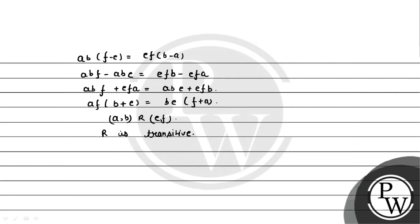Since relation R is reflexive, symmetric, and transitive — all three properties hold — that means relation R is an equivalence relation. Hence R is an equivalence relation. That is our answer. Hope you understood well, best of luck.